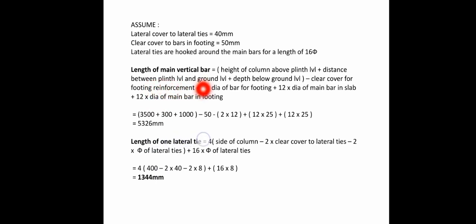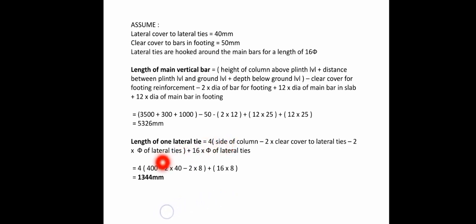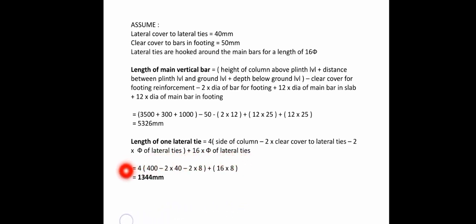Length of one lateral tie = 4 × (side of column) − 2 × (clear cover to lateral ties) − 2 × (dia of lateral ties) + 16 × (dia of lateral ties). Column side = 400mm, clear cover to lateral ties = 40mm, dia of lateral ties = 8mm. This gives 1344mm as the length of one lateral tie. Number of lateral ties = 4726 ÷ spacing + 1 = 17.